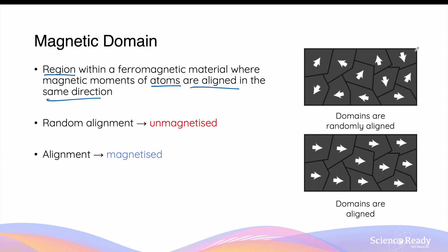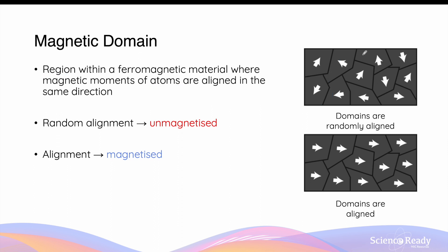For example, consider a rectangular block of iron, which is a ferromagnetic material. Different regions can be drawn within the material, where arrows indicate the collective direction of the magnetic fields of the atoms — each region being one domain. In the first scenario, the domains are randomly orientated, and the material is said to be unmagnetized, because the overall magnetic moments of these domains cancel each other out.